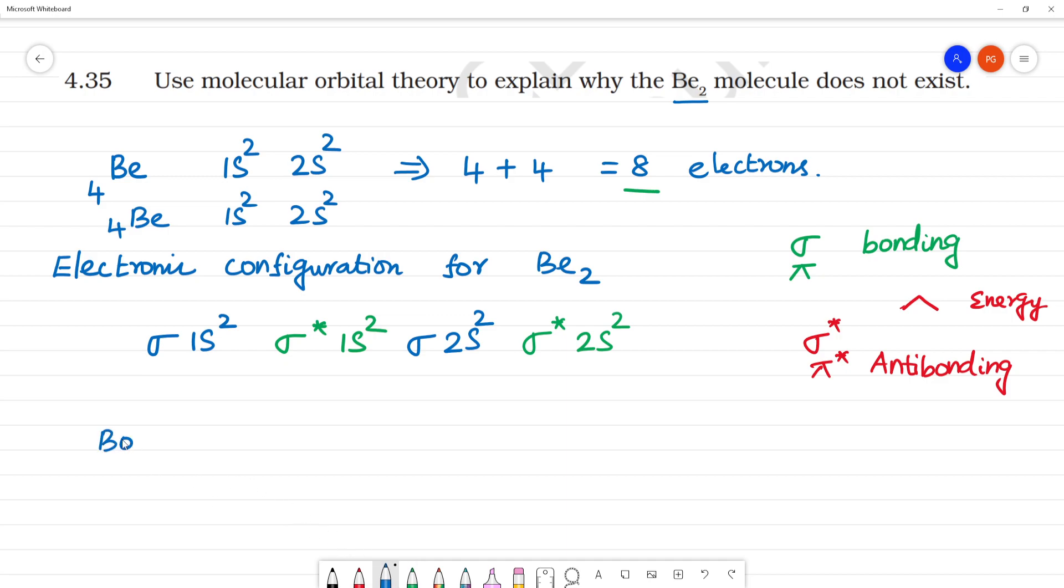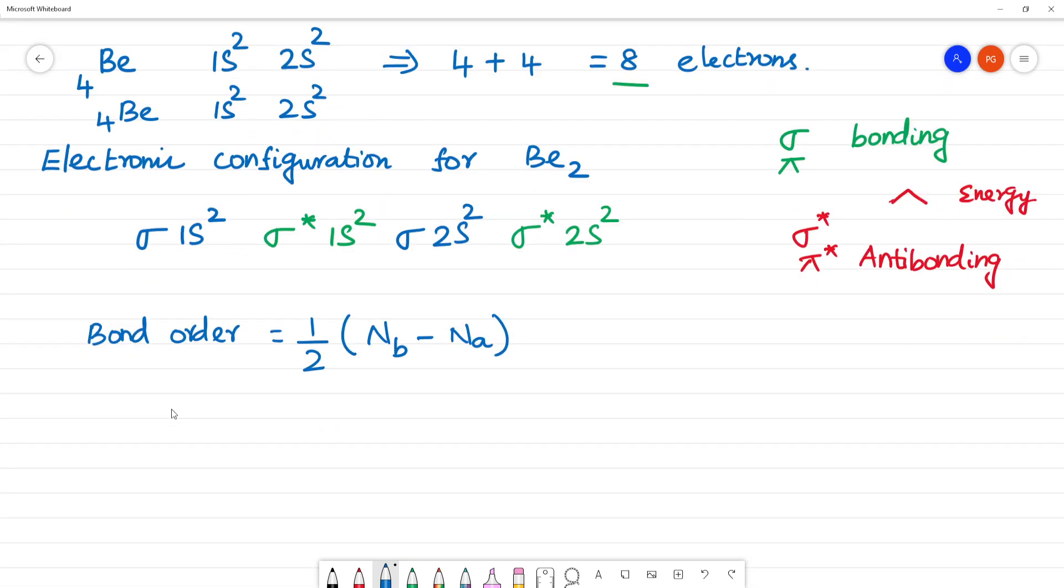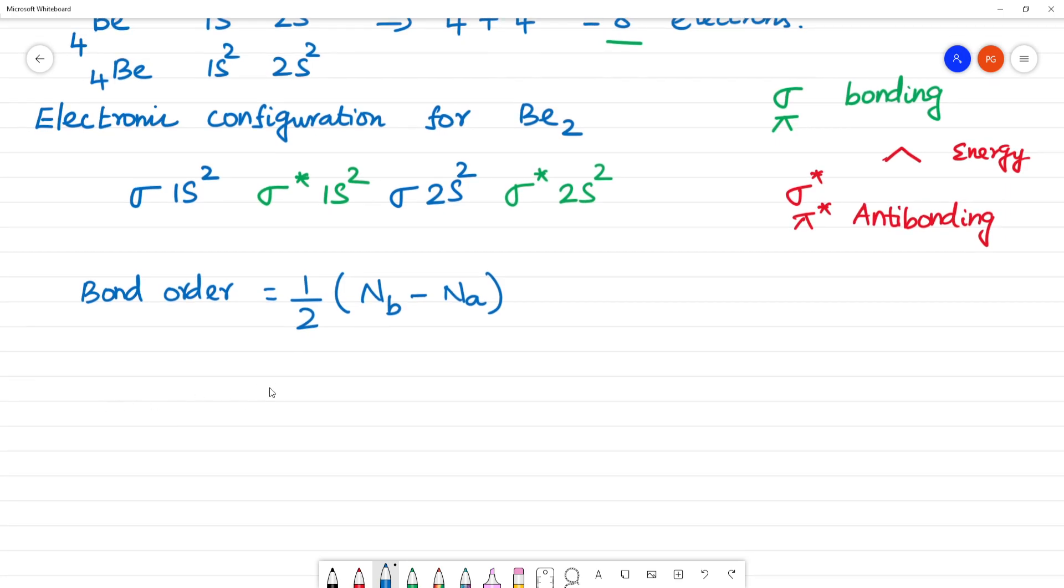Now we have to calculate bond order. Bond order formula is ½ into Nb minus Na, Nb minus Na. What is Nb? Nb is number of electrons in bonding molecular orbital.